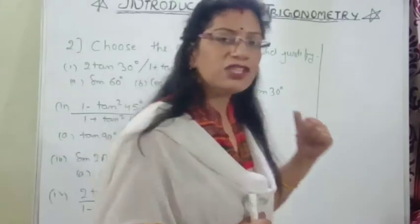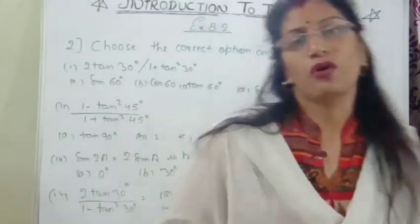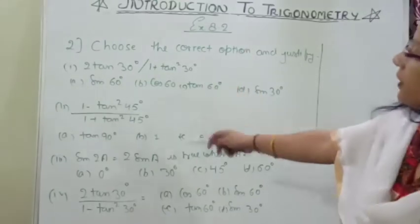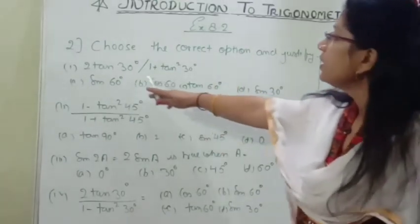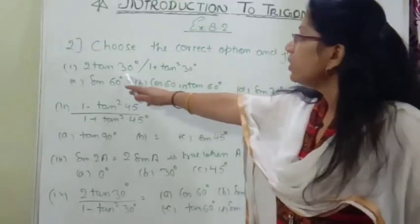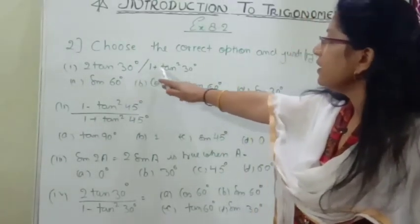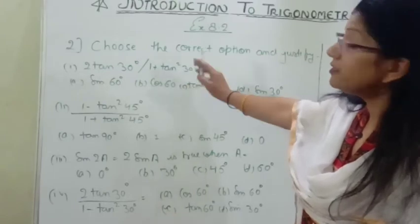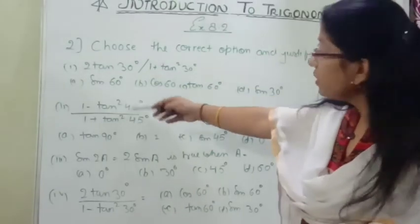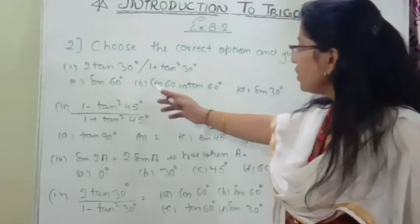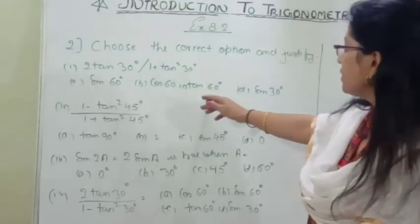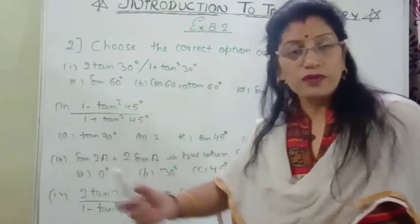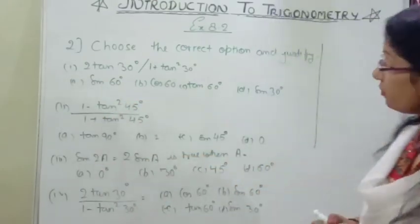These are multiple choice questions or objective questions. We have to solve this. The first part is: 2 tan 30° divided by 1 plus tan² 30° equals to — sin 60°, cos 60°, tan 60°, or sin 30°. One of the options is true, so we have to solve in rough.